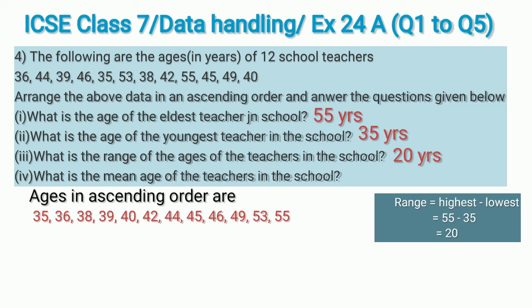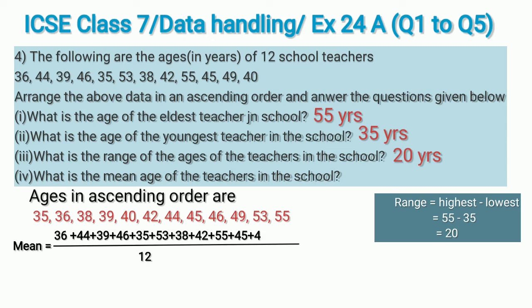The fourth sub-question asks for the mean age of the teachers. For mean, we add the ages of all 12 teachers and divide by 12. Mean equals sum of all ages divided by 12, which comes to 43.5 years. So the mean age of teachers in the school is 43.5 years.